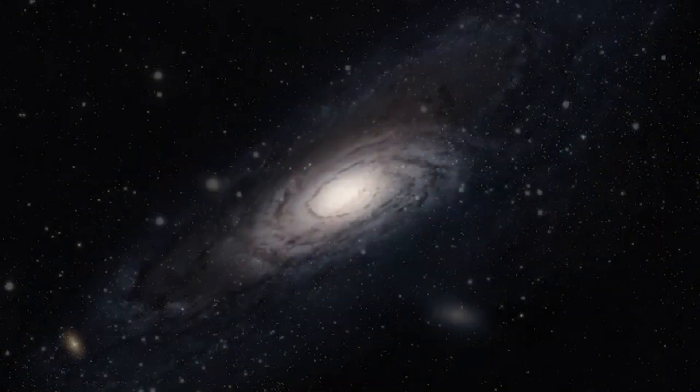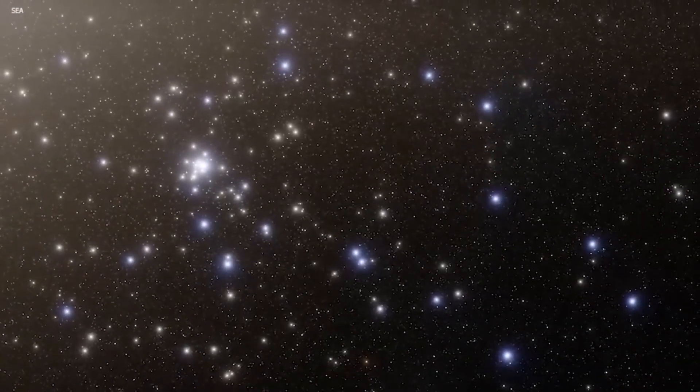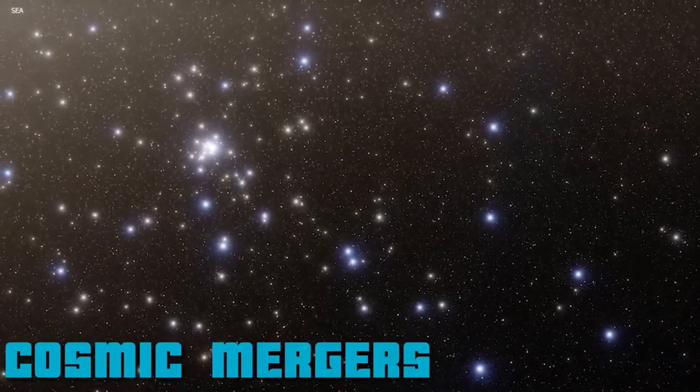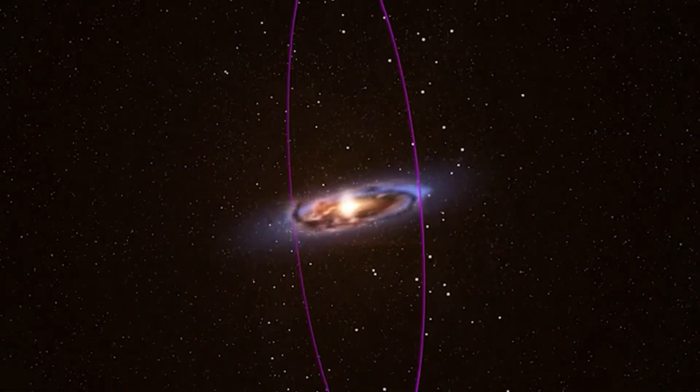But there's more to its tale. A halo of dwarf galaxies encircles Andromeda, shedding light on its vibrant past of cosmic mergers. Over the years, stars from these smaller galaxies have fused with Andromeda, etching captivating patterns in its stellar aura.